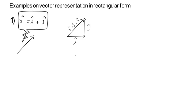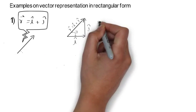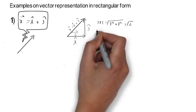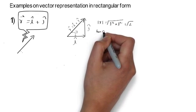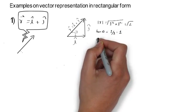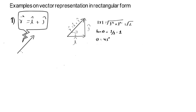This vector has a magnitude and a direction. If the vector makes an angle theta with the X axis, the magnitude of R will be equal to √(1² + 1²) = √2 from the Pythagorean theorem. The angle with the X axis is given by tan θ = 1/1 = 1, so θ = 45°. Thus î + ĵ is a vector of magnitude √2 at 45° from the X axis.